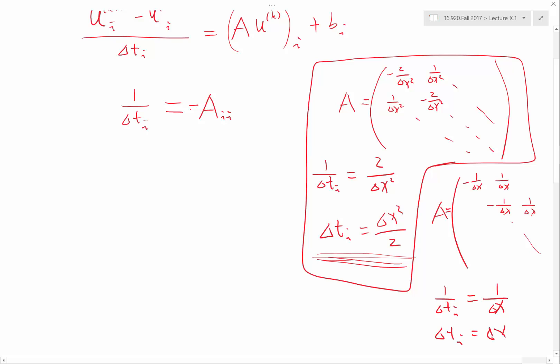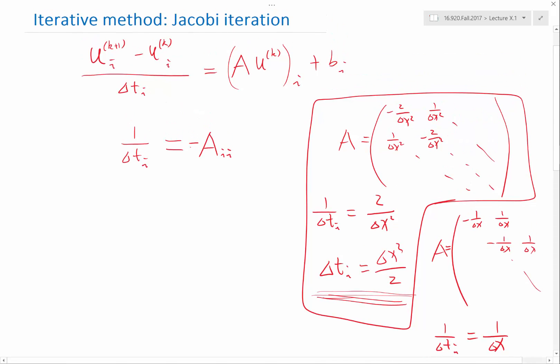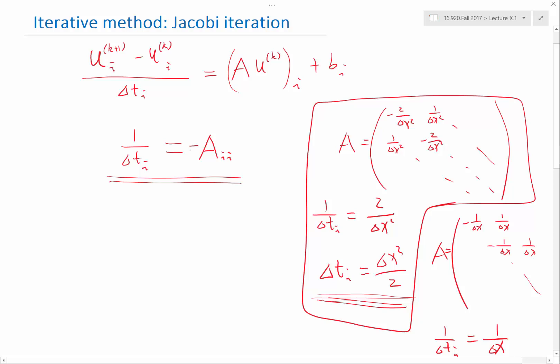Again, the CFL condition, right? That's how much you can take before the system would go unstable. So this is a very informed way of taking a time step for different grid points. And if I write it down in a more, in this way, so if I,